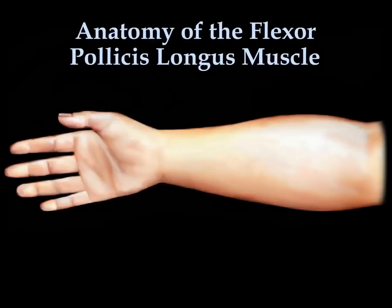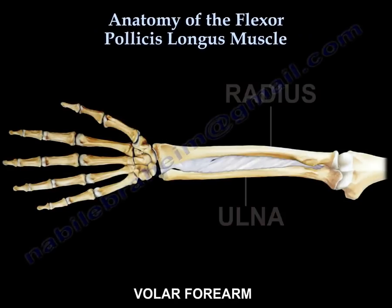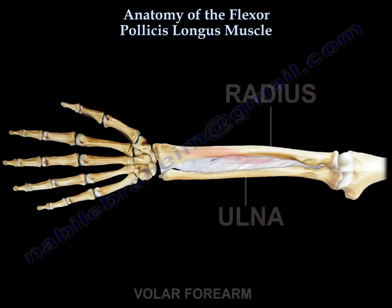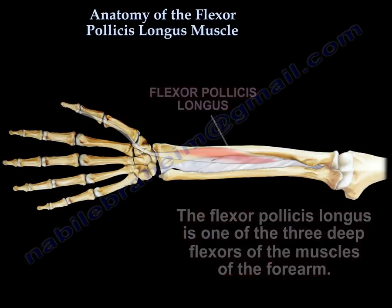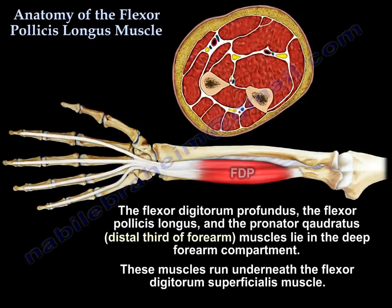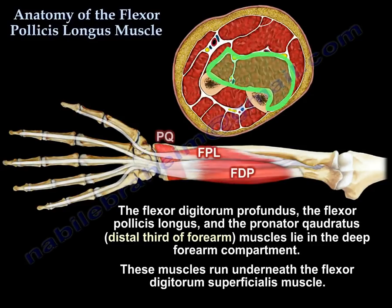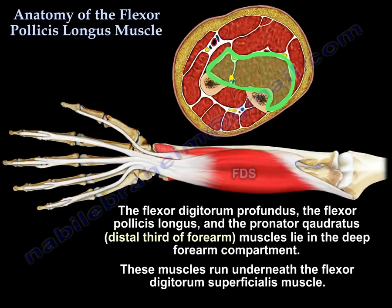The flexor pollicis longus is one of the three deep flexors of the muscles of the forearm. The flexor digitorum profundus, the flexor pollicis longus, and the pronator quadratus lie in the deep forearm compartment. They run under the flexor digitorum superficialis.